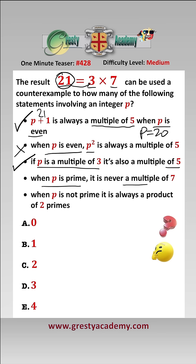Number four: when p is prime it's never a multiple of 7. Well, 21 is not prime, and in fact this statement is always true so it doesn't have any counterexamples. And number five: when p is not prime it's always a product of 2 primes. Well, 21 is not prime and it is a product of 2 primes, but that is not a counterexample to that, even though this statement is false. So therefore the number of counterexamples is 2, which is C.